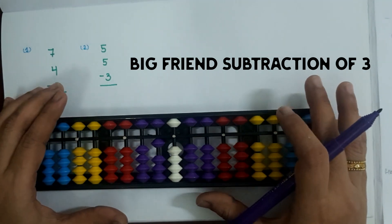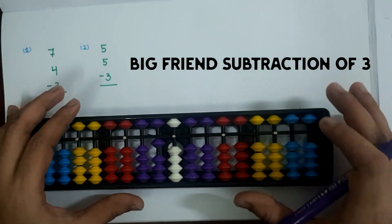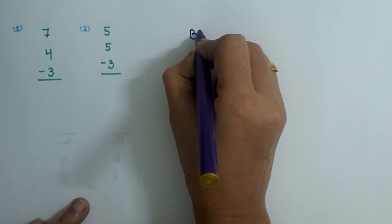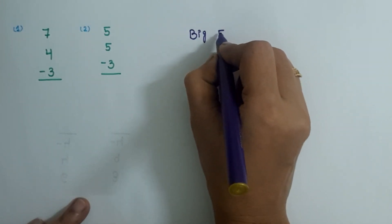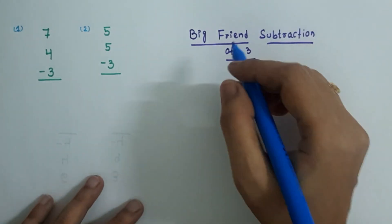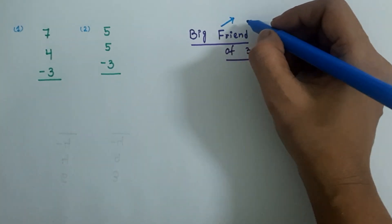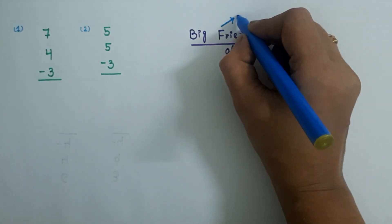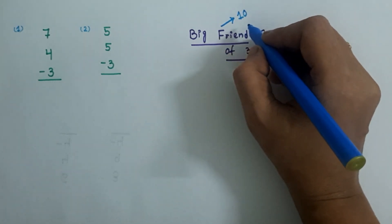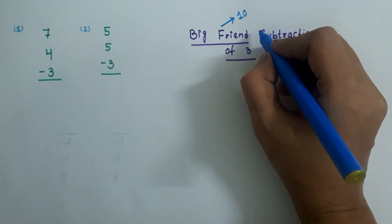Hello everyone, welcome back to my channel. In this video we are going to learn how and when we can apply the big friend subtraction of 3. Now I am going to write the formula. First, let me tell you what big friends are. Big friends are numbers which add up to a total of 10. Which two numbers between 1 to 9, when added together, give 10 — those two numbers are called big friends to each other.